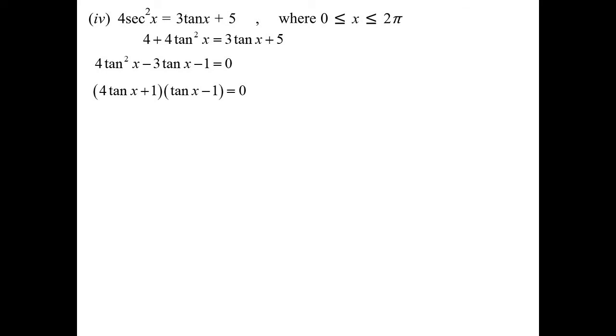Two possibilities: tan x is -1/4 and tan x is 1. tan x is -1/4, that's going to be in the second and the fourth quadrant because tan's negative. The acute angle is not an exact value, so I'm using an approximation to three decimal places: 0.245 radians.